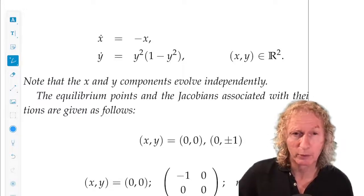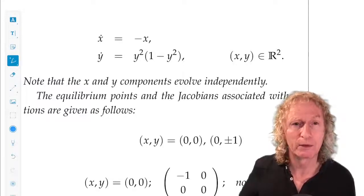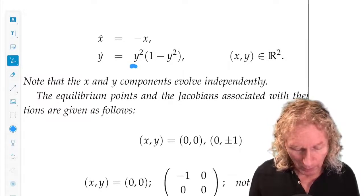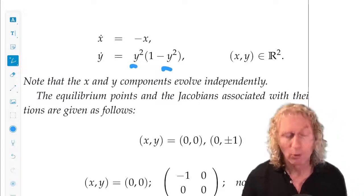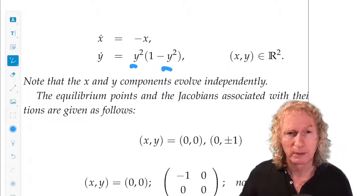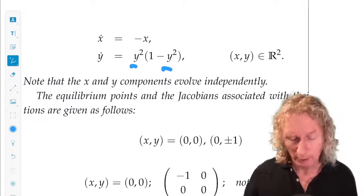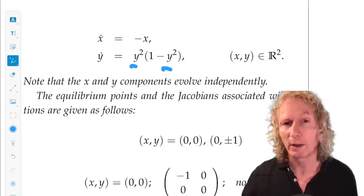The y-axis is invariant. And for y equals zero, y equals plus or minus one, y dot equals zero. And those three horizontal lines, y equals zero, y equals plus or minus one, are invariant manifolds.